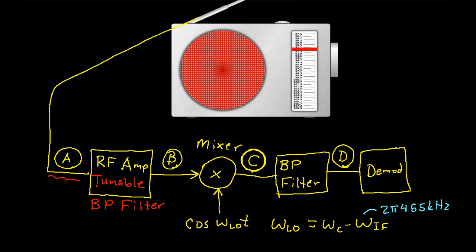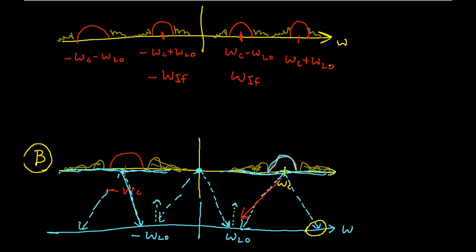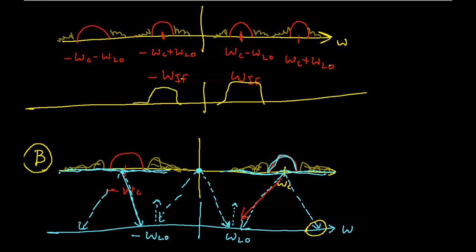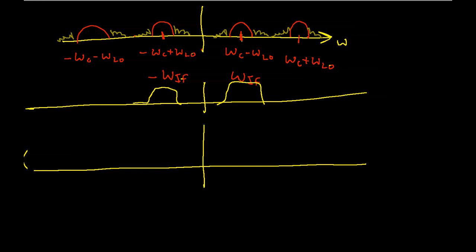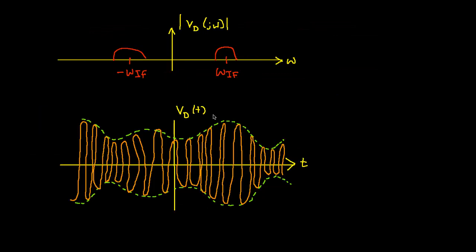Now I know what the signal looks like at point C — it's got the radio signal that I want at the intermediate frequency, and then all the junk that followed us around. To get rid of the junk, we now use the final bandpass filter. This filter has a sharp cutoff at the edges of its pass band. When I run the output of the mixer through this filter, the only thing that remains is the radio station that I'm interested in at ωIF and minus ωIF. Everything else has been attenuated to the point where it's negligible. Now I have only the signal I want at a particular frequency, and the only thing left is to reconstruct the signal — take it from the intermediate frequency back to the original frequency band, often called baseband.